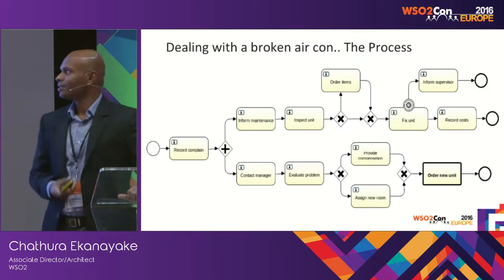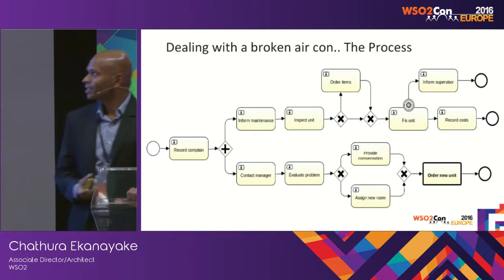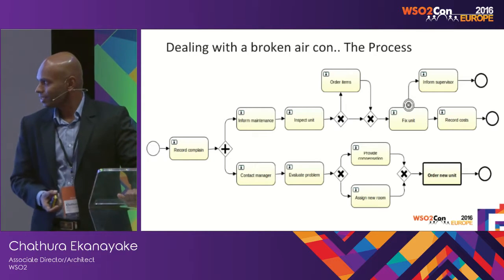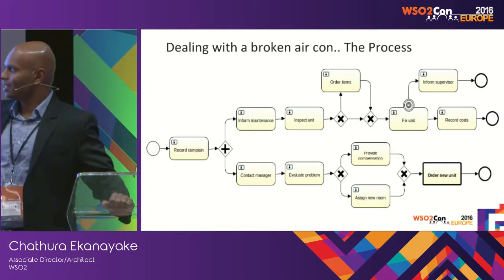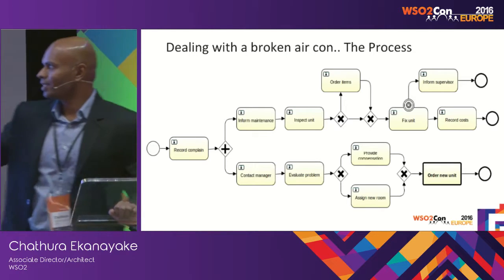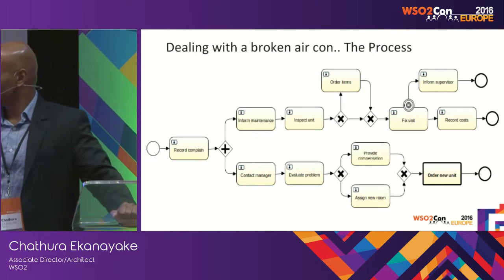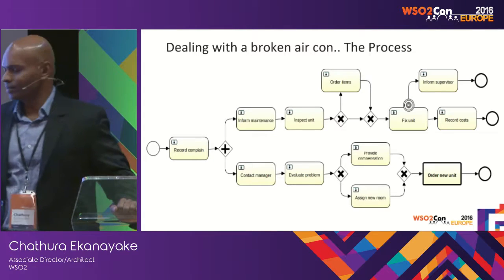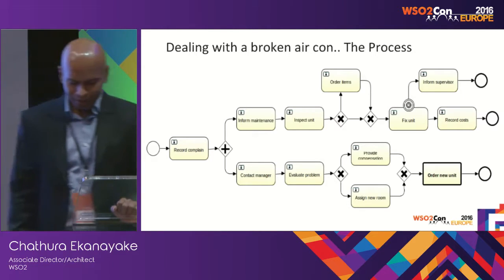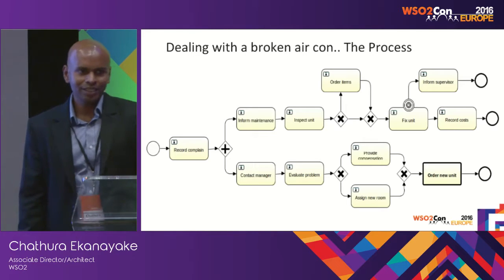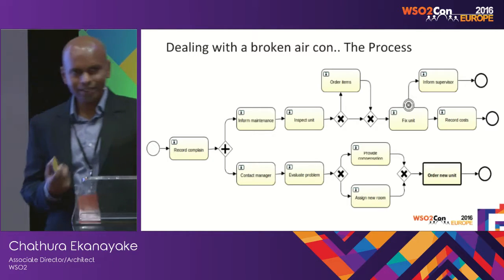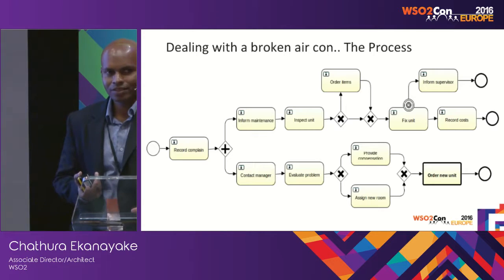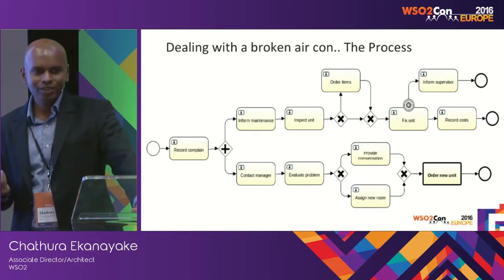So how to fix it? We have to focus on the process. This is the process for fixing the broken air conditioner: first we have to record the complaint, then the receptionist has to inform the maintenance guys, she also has to contact the manager, and the manager can evaluate the problem — there are many steps involved. The first step in going towards a process-oriented organisation is to concentrate on your processes. That is where the Process Centre helps you.